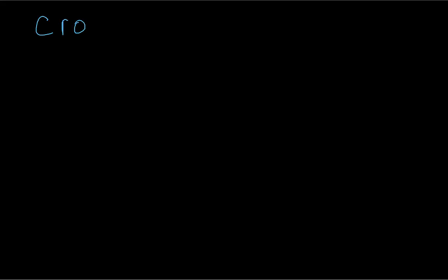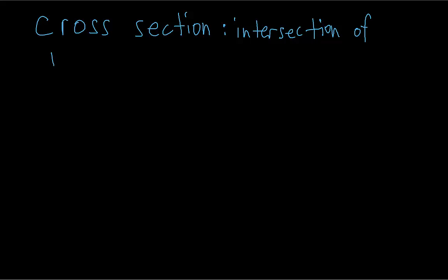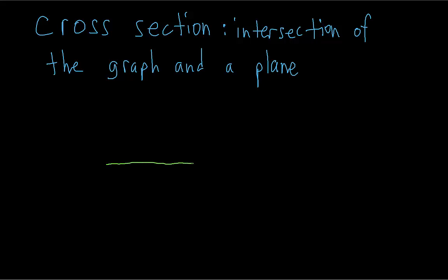We're going to come up with tools to help visualize what these graphs are going to look like. One tool to visualize these graphs is to take cross-sections of the graph. When you take a cross-section, you basically take one slice of the graph and see what the graph looks like just on that slice. It's the intersection of the entire graph and one specific plane.